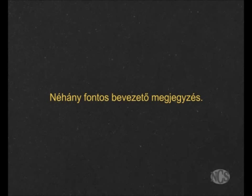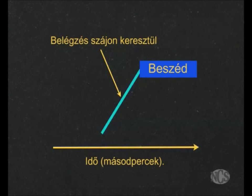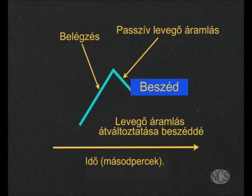Week 5: Airflow. Here are some important introductory comments. Virtually everyone, when they speak, breathes in through the mouth. The aquamarine color going up at a 45 degree angle indicates inhalation through the mouth, and then speech begins, with time moving as seconds from left to right. What you are going to have to learn to do is to let some air come out of your mouth first before you speak.